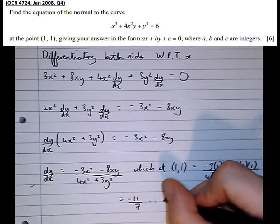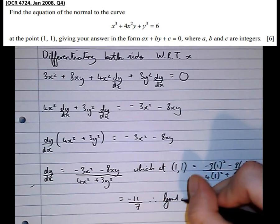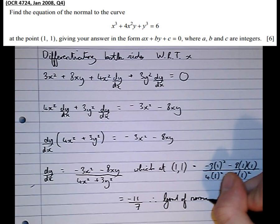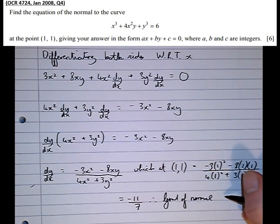So that's the gradient of the tangent, therefore the gradient of the normal is the negative reciprocal of that, which is 7 elevenths.